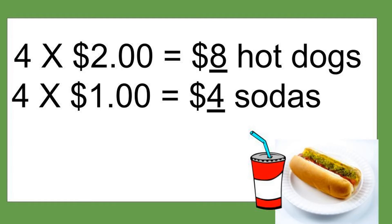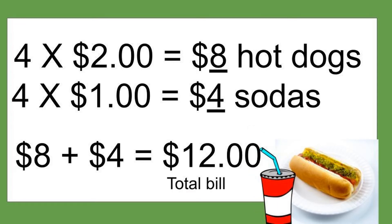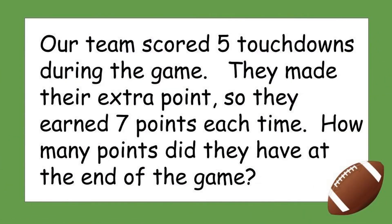When we count by twos four times we get $8 for the hot dogs: 2, 4, 6, 8. Then 4 times 1 equals 4. But what do we do now to figure out the total? That's right — we're going to add 8 plus 4. It cost $8 for the hot dogs and $4 for the sodas, so 8 plus 4 equals $12. That's your total bill.